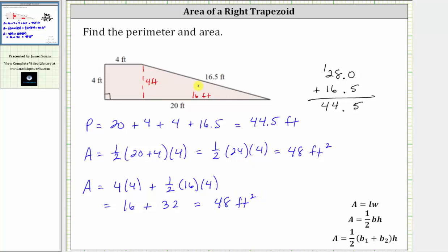So again, because we have a right trapezoid, there are two ways to find the area. I hope you found this helpful.